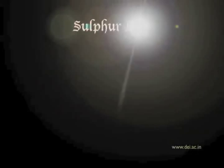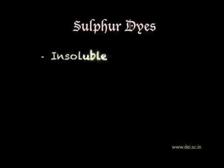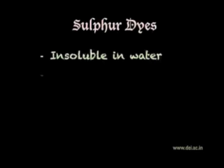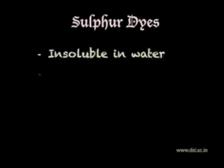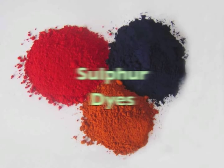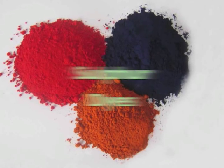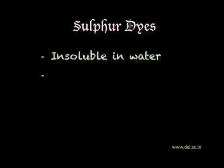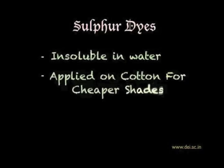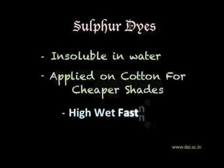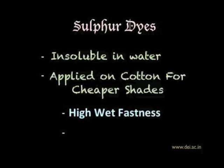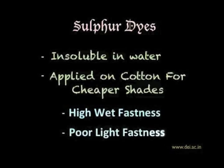Sulfur dyes are insoluble in water but made soluble with extra agents. They are usually applied on cotton for cheaper shades and have high wet fastness but poor light fastness during dyeing.